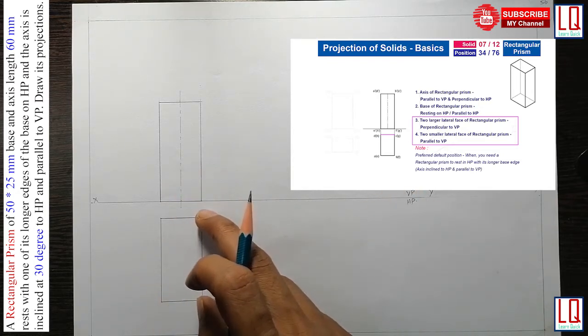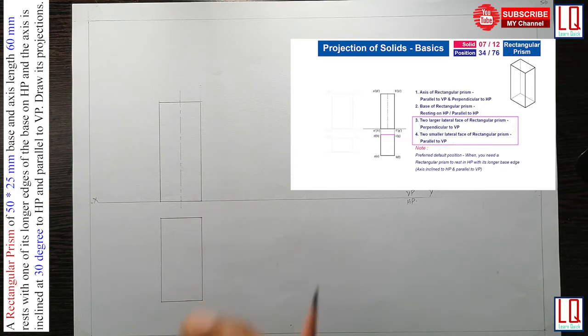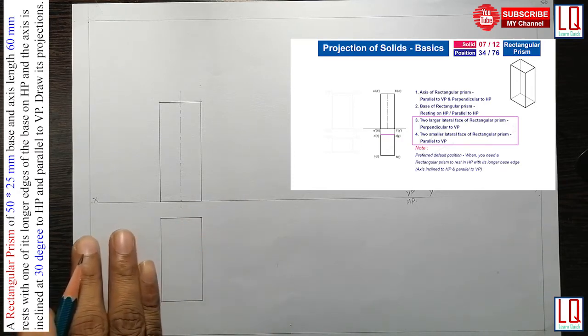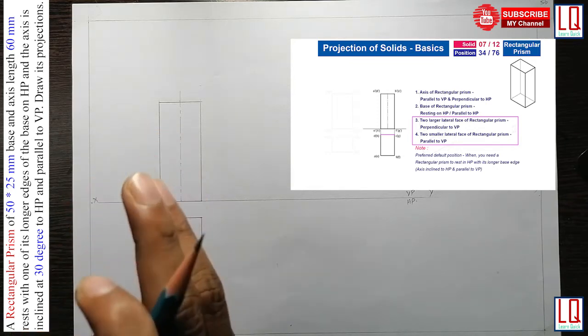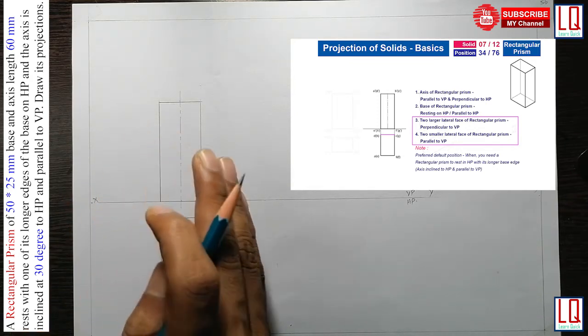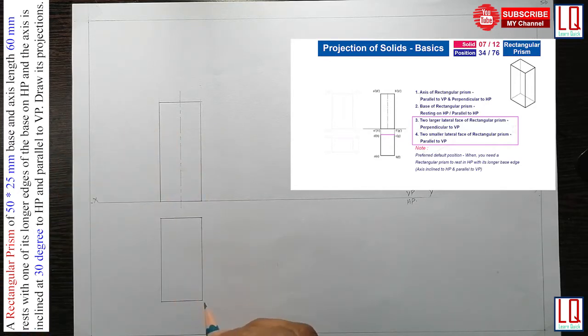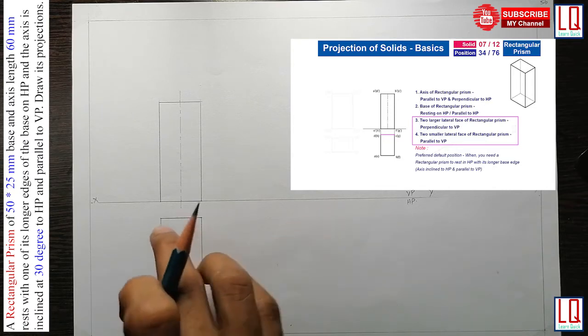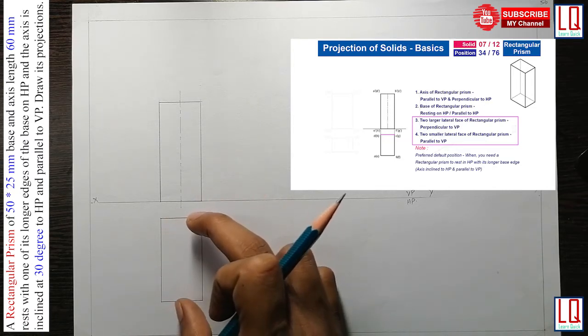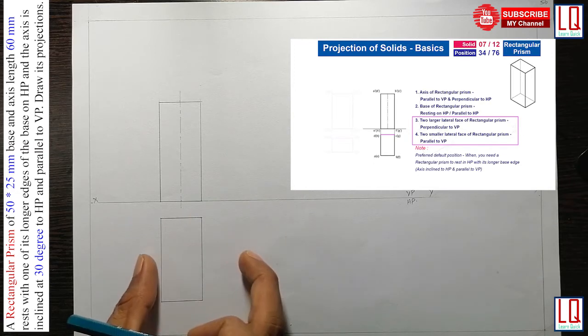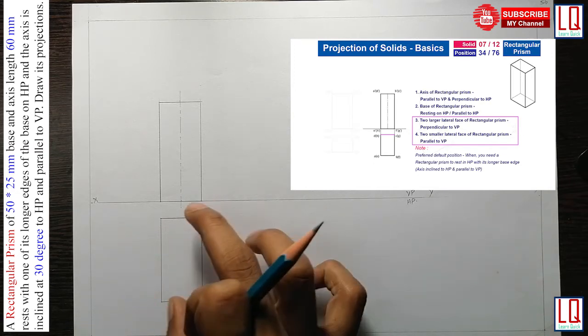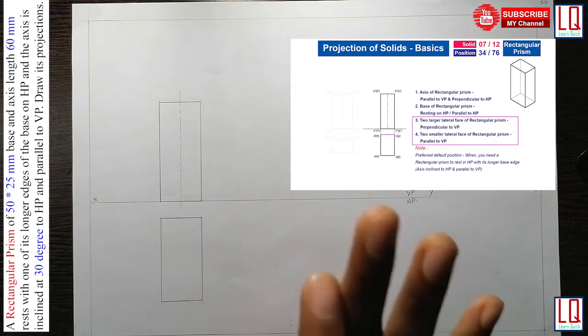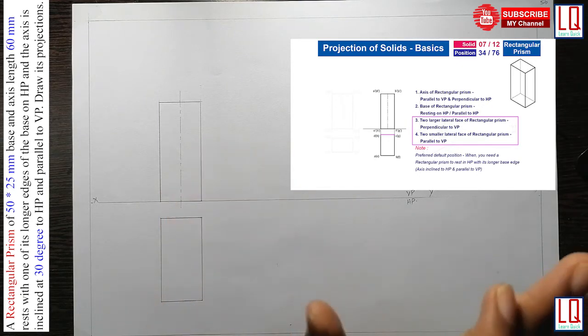So we have kept the longer side of this rectangle in the right side or it can be left in the left side so that when this rectangular prism is inclined to the right or the left, the longer edge is going to rest in the HP. In case, if in the question it is given as a shorter edge is resting, then you should have drawn this rectangular prism in this manner. So now, we have chosen this position 34 as the correct default position for this question.